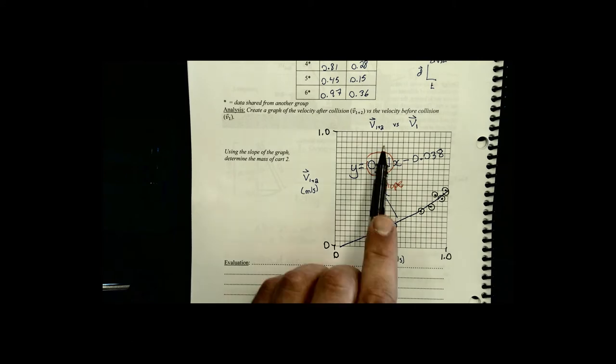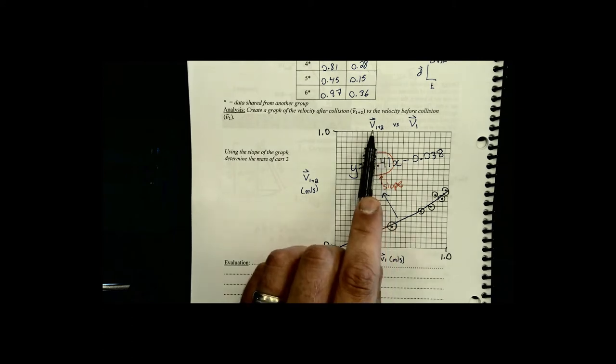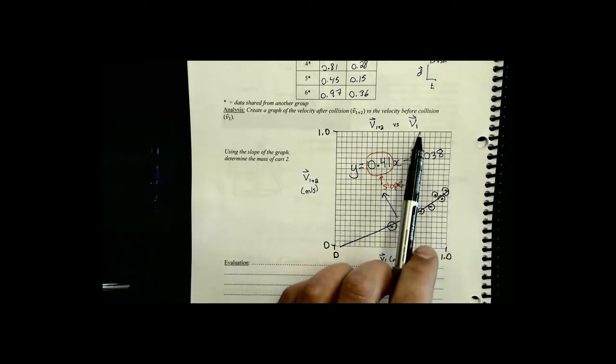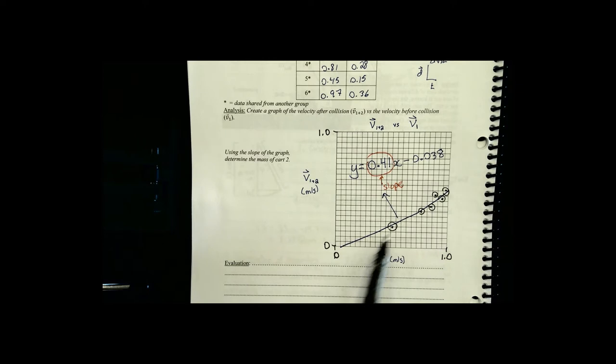We have a graph of velocity one and two, that was our cart which had stuck together with the second cart versus velocity one. We've made our graph, we've found our line of best fit, we found our slope, we did all that on our calculator last class. Now I'm going to show you how you can take the slope and from that work out what the mass of that second cart was.